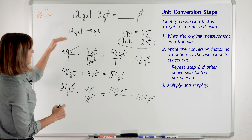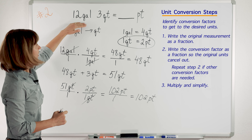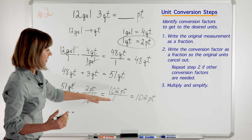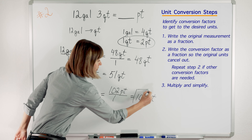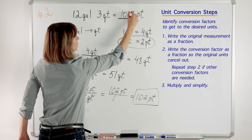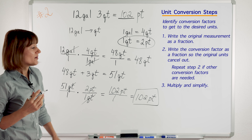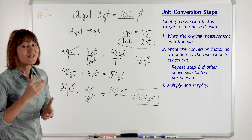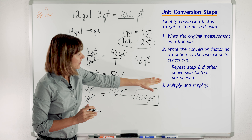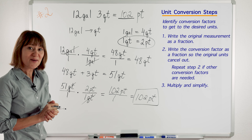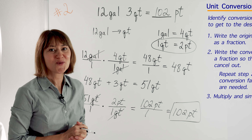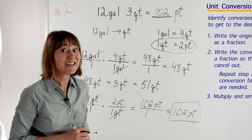So with this second method, we changed 12 gallons into quarts, added the quarts, and then changed quarts into pints — and this is our answer, just like the first way: 102 pints. I hope this video helped you feel better about doing conversions. Write down the steps and look over this example again. I wish you success in your studies — keep up your good work, and I will see you in my next video.